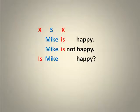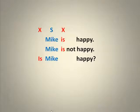For example, 'Mike is happy.' 'Is' is the X word. All X words always appear in negative sentences, so we could say 'Mike is not happy.' X words always begin questions: 'Is Mike happy?' And so the word or words between those two places where we can put 'is' is the subject. In this case, it's 'Mike.'